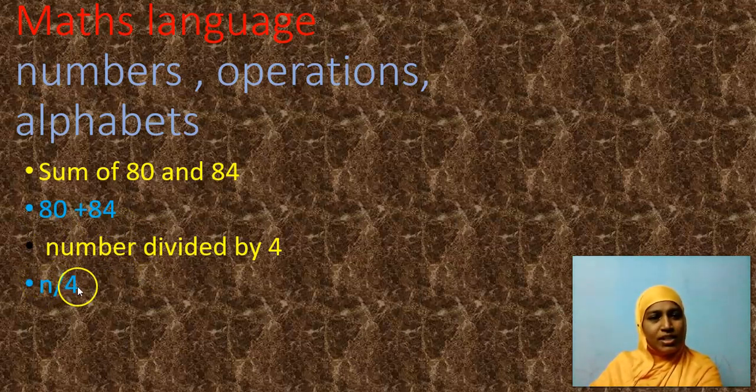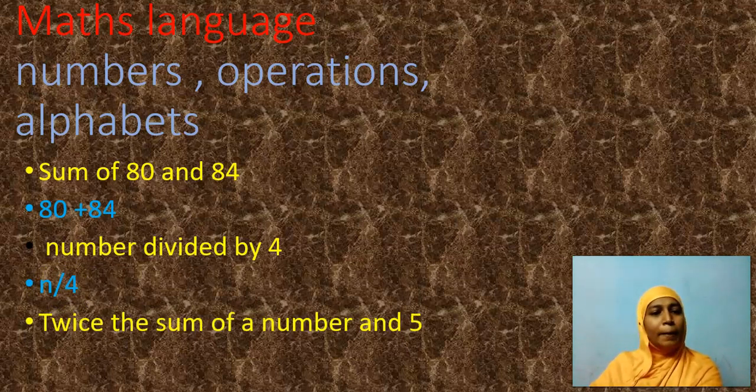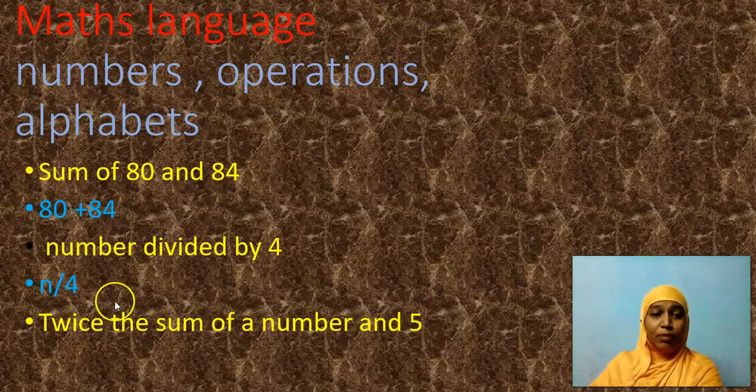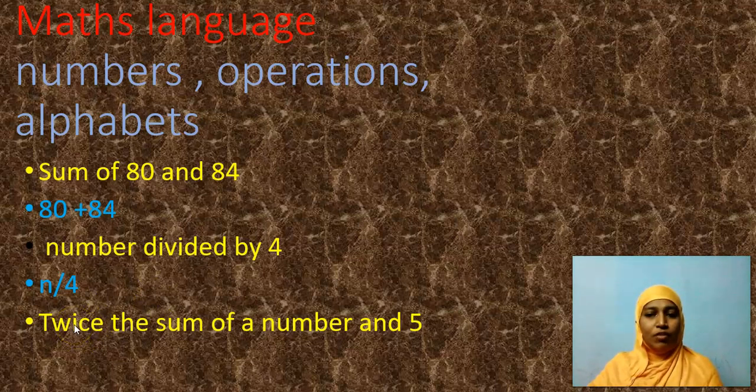It occupies less space, less energy, less time. So mathematicians are always smart. Then twice the sum of a number and 5. Very big note. Twice in the sense, double. So what number we will use when we talk about twice? It is nothing but 2, number 2.